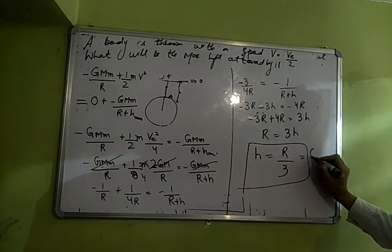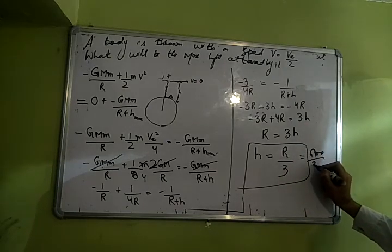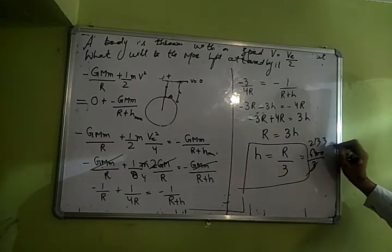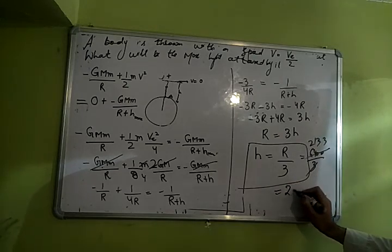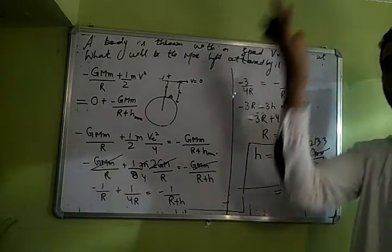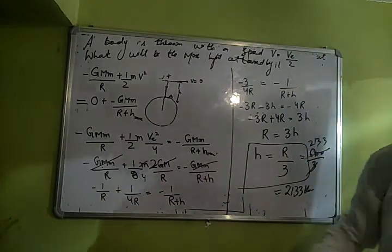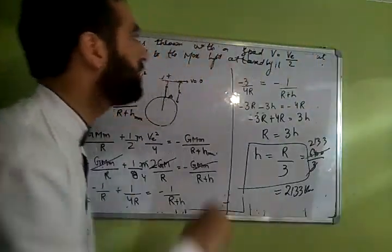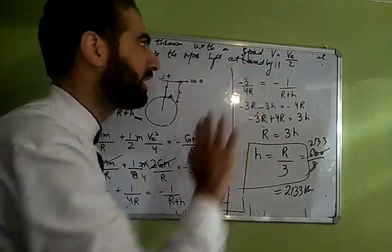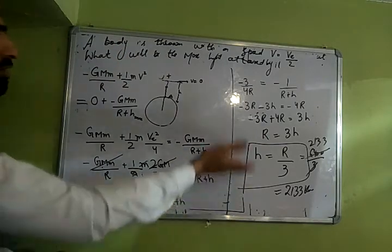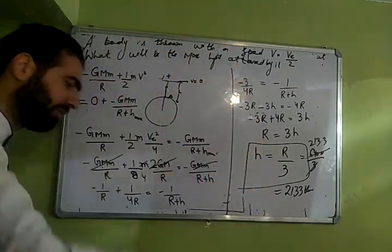To kitni height attain karega? 1 by third of the radius of earth. Radius of earth you know 6400 divided by 3, 3, 2, 2, 6, 3, 1, 3, 3, 3, 2, 9. To lagbag yeh kitna uncha jayega? 2133 km upar jayega. Then it will return back. But why it will return back? Because you are not giving it the speed equal to escape or greater than escape. You are imparting the speed less than the escape. Us wajah se yeh kuch height attain karega, then it will come back.